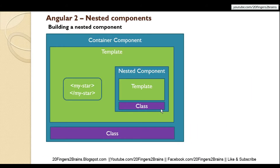The diagrammatic structure shows two components: one is the parent component and the other is the child component. The outer or parent component is known as the container component — it has its template and class. The inner or child component is the nested component, which also has its template and class. We nest the child component into the container component by referring to its directive name — in this case, 'my-star' — in the template of the container component.